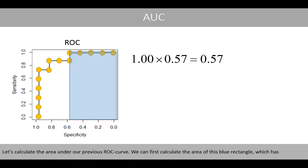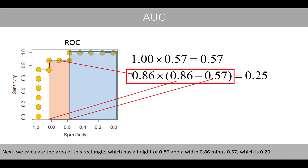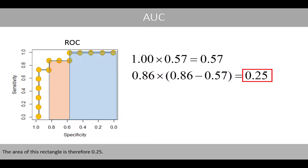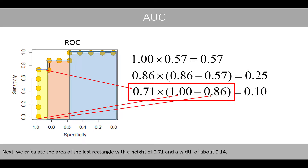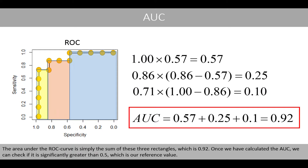Calculating the area under our ROC curve: the first blue rectangle has a height of 1 and a width of 0.57, giving an area of 0.57. The second rectangle has a height of 0.86 and a width of 0.29 (0.86 minus 0.57), giving an area of about 0.25. The third rectangle has a height of 0.71 and a width of about 0.14, giving an area of about 0.10. The total AUC is the sum of these three rectangles, approximately 0.92. We can then test whether this is significantly greater than 0.5.